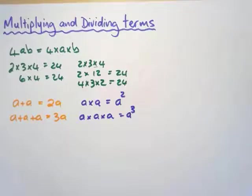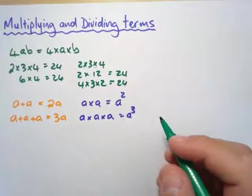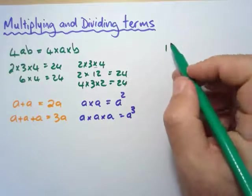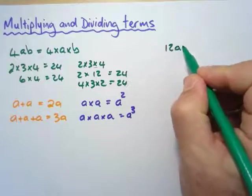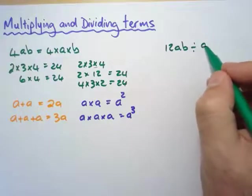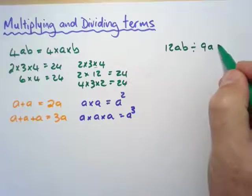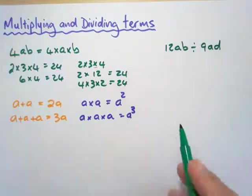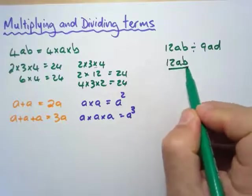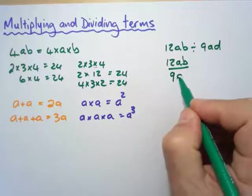With dividing, if they tell us that, let's say 12ab divided by, and sometimes they put it in brackets, let's say 9ad. We write it as a fraction. We're going to say it's 12ab divided by 9ad.